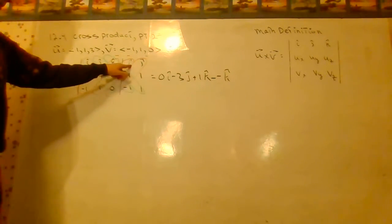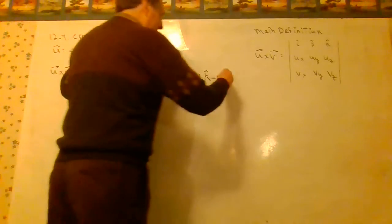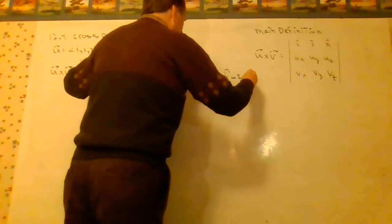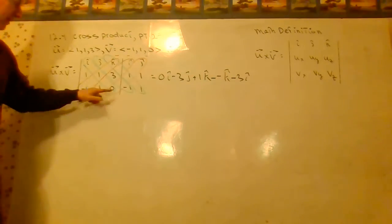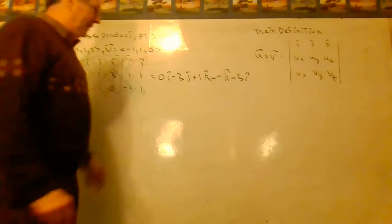1 times 3 times I is 3I with a minus. And 0 times 1 times J is 0 J with a minus.